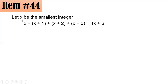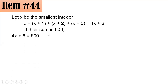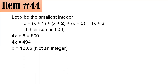Since x must be an integer, let's check if 500 could be a sum. Equating 4x plus 6 to 500 and subtracting 6 from both sides gives 4x equals 494. Dividing by 4, x is 123.5, which is not an integer. So 500 cannot be the sum of four consecutive integers.